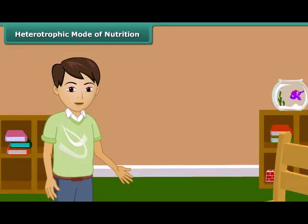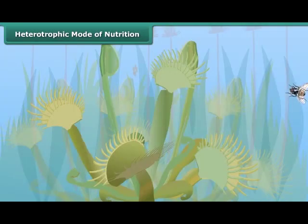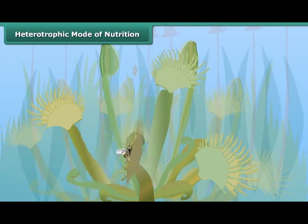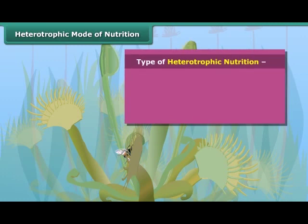Now let us know about those plants which do not have chlorophyll and cannot synthesize their food on their own. Just think about how do they survive and from where do they derive nutrients. These plants derive food from other plants and animals, and this type of mode of nutrition is called heterotrophic mode of nutrition. The plants in which this kind of mode of nutrition is found are known as heterotrophs. There are four types of heterotrophic plants.